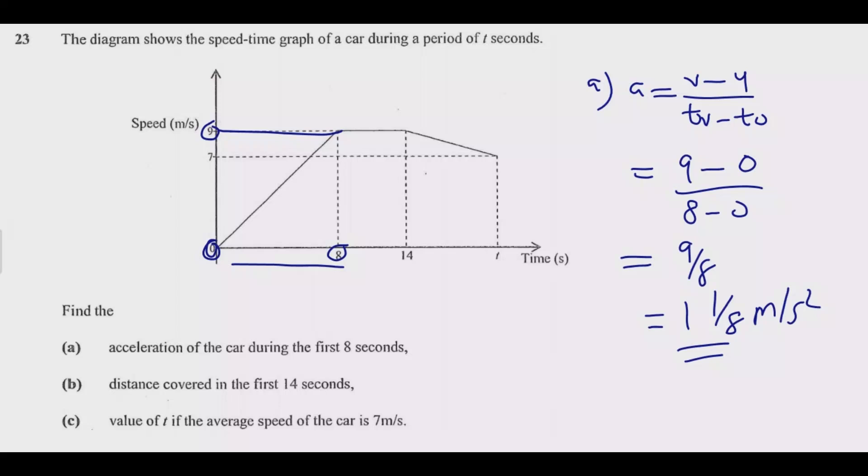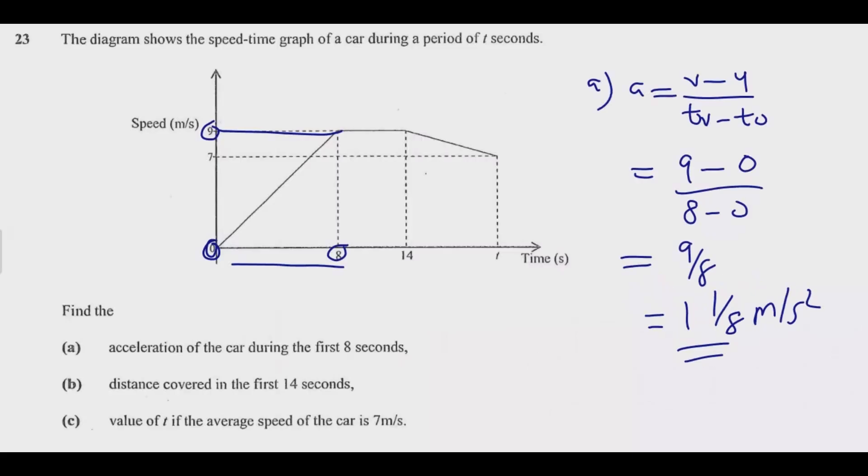Or you can use this, but you can leave it in this form. Then once you do that, you are good to go. You get this one mark because it is fairly straightforward. Just watch out for the unit. The acceleration is meters per second squared.